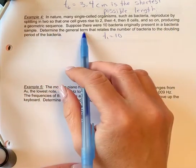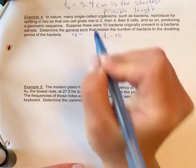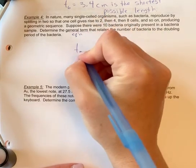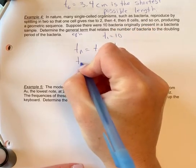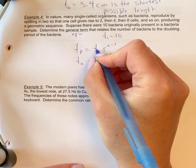Present in a sample, determine the general term. So general term means you're finding just an equation for tn. It'll be tn equals your equation that relates the number of bacteria to the doubling period of the bacteria. So you write down your tn formula and you're just plugging in your term one and your n value.